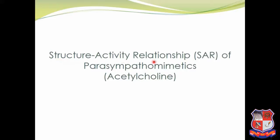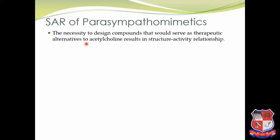Structured Activity Relationship — that is SAR — of Parasympathomimetics. Parasympathomimetics means we will see the SAR of Acetylcholine. The necessity to design compounds that would serve as therapeutic alternatives to Acetylcholine results in structure-activity relationships. How SAR of Acetylcholine is discovered? It is because of our necessity to design compounds which are similar or alternative to Acetylcholine, because Acetylcholine has some limitations, so we want to discover some alternatives.